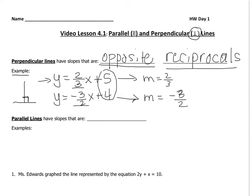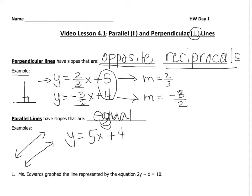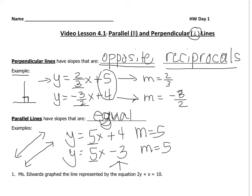Parallel lines are always the same distance apart and will never intersect — so they have slopes that are equal. For example, y = 5x + 4 is parallel to a line with slope 5 because both slopes are 5. The y-intercepts don't make a difference; the equal slopes are what make them parallel.